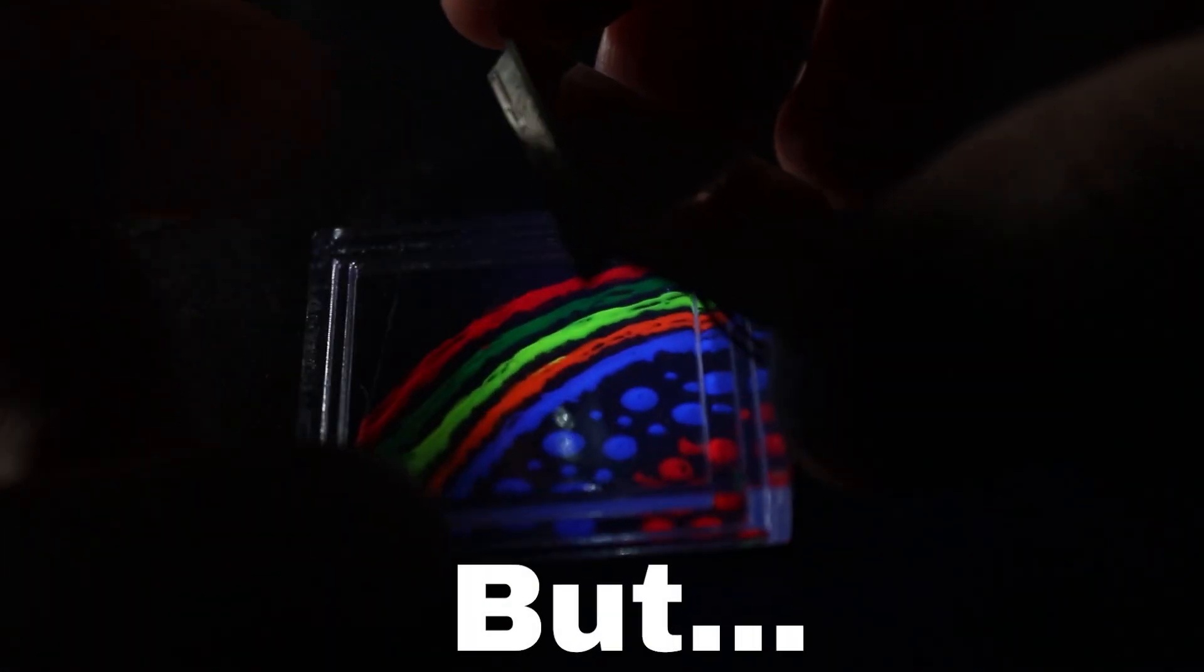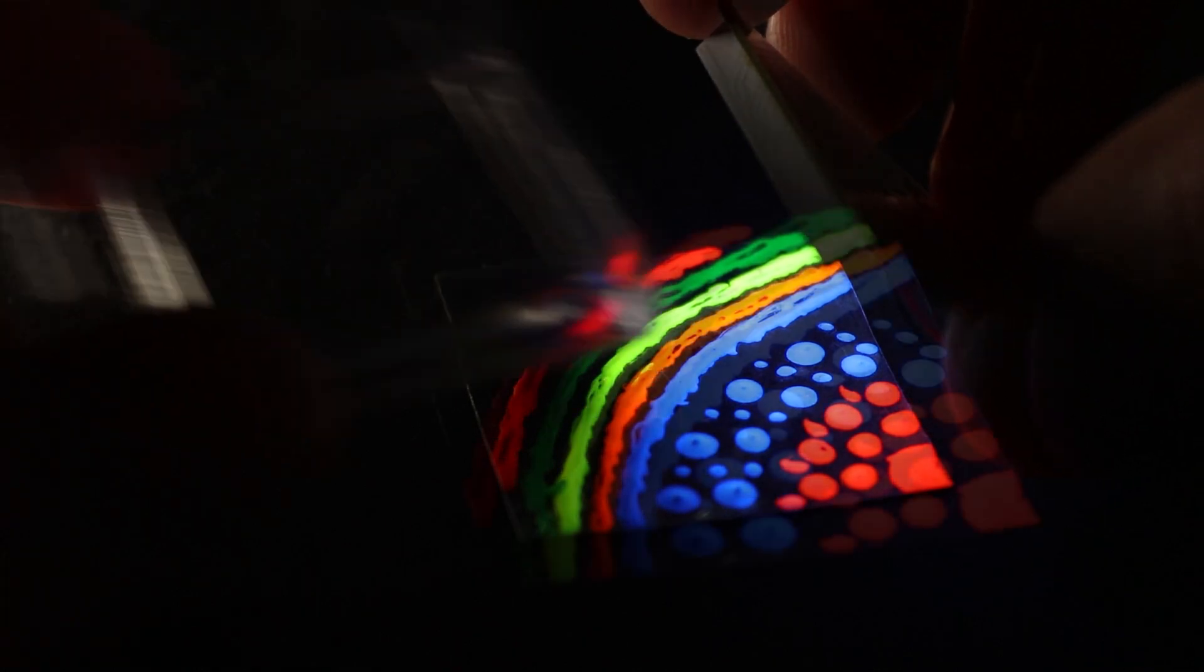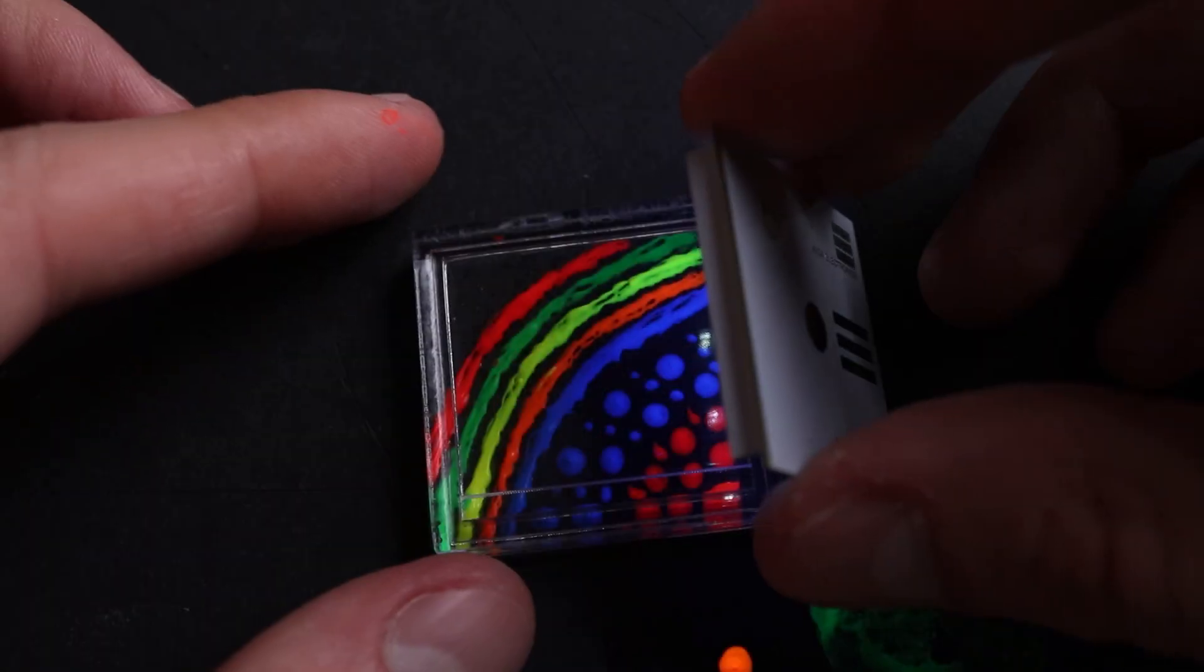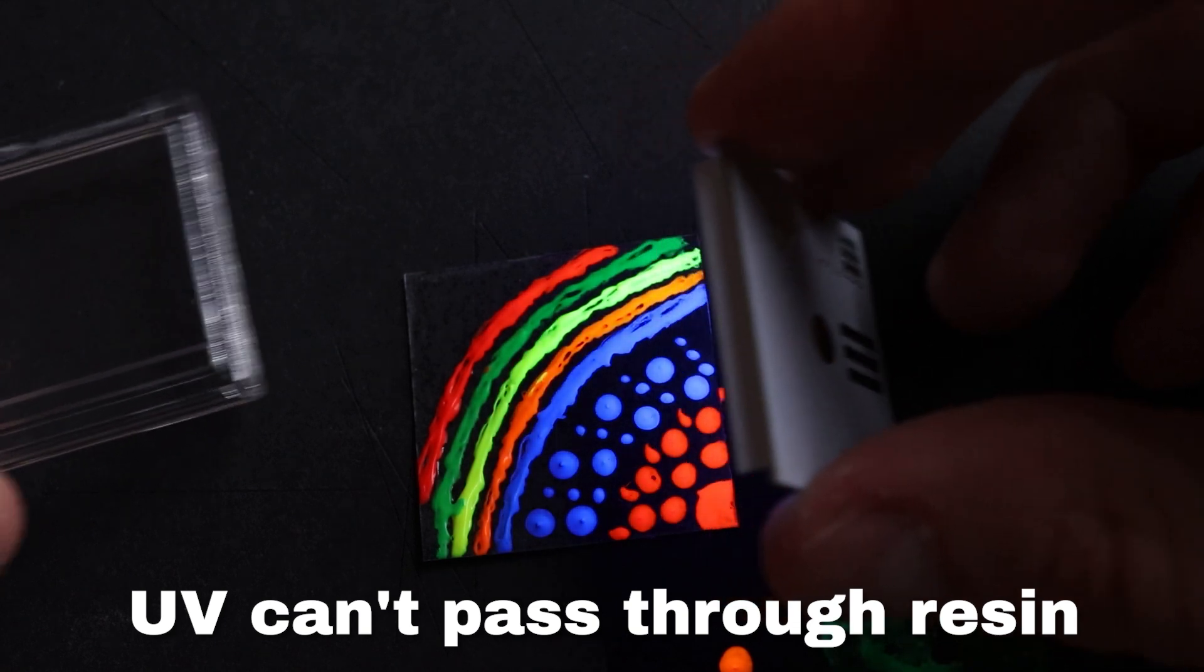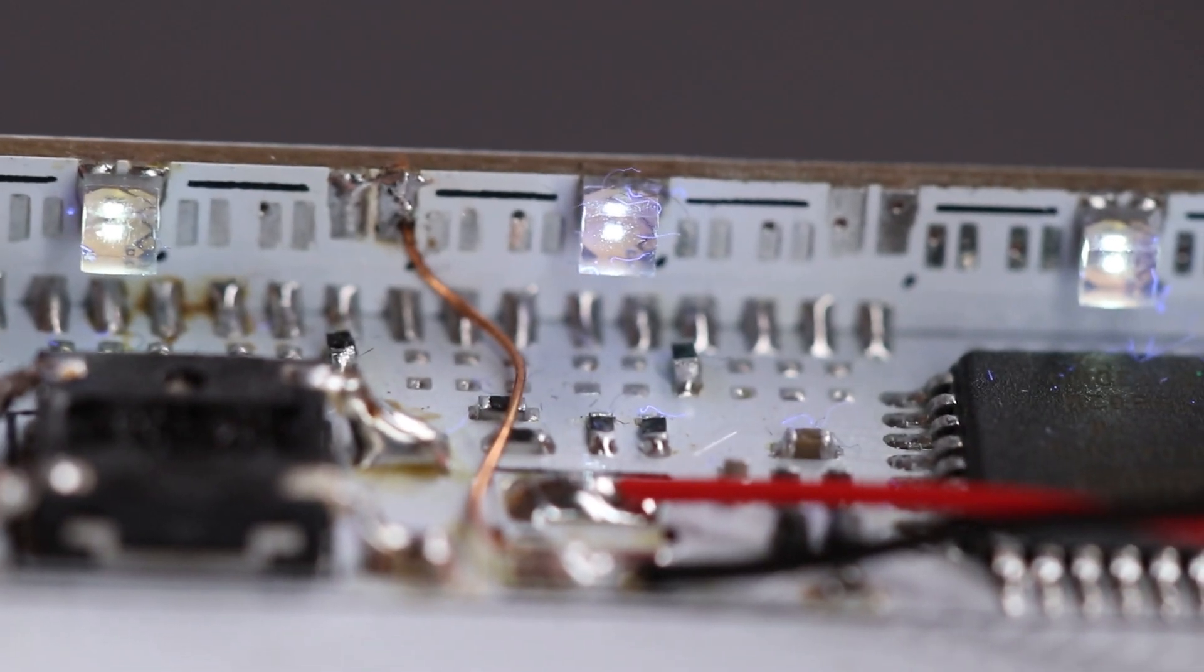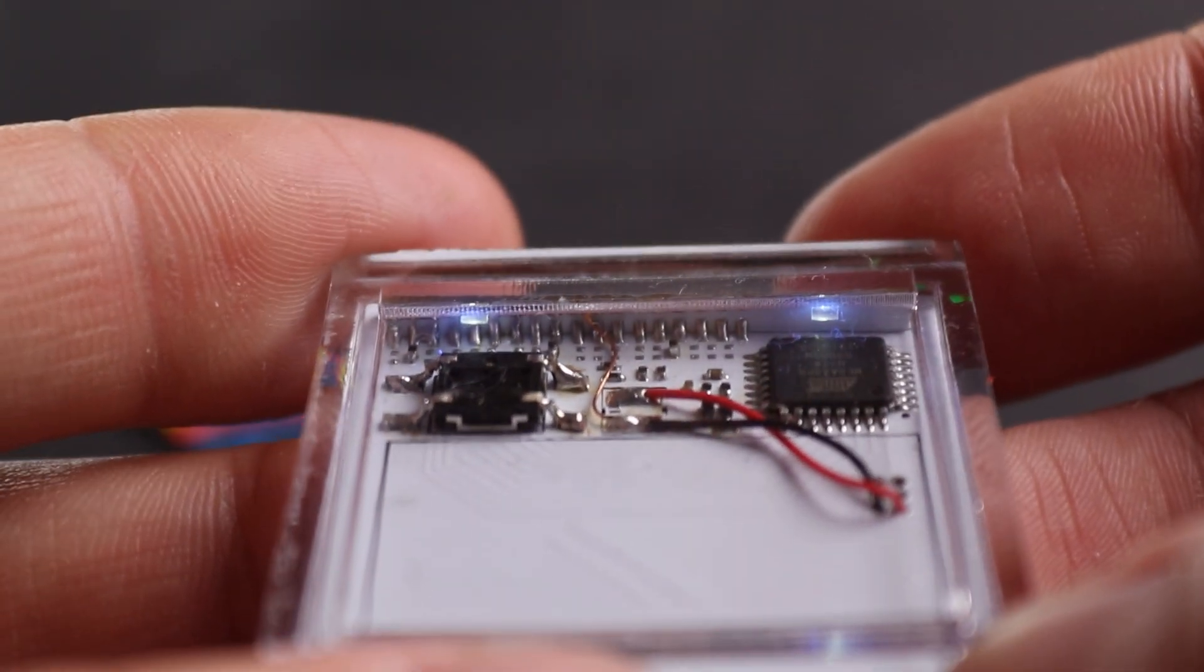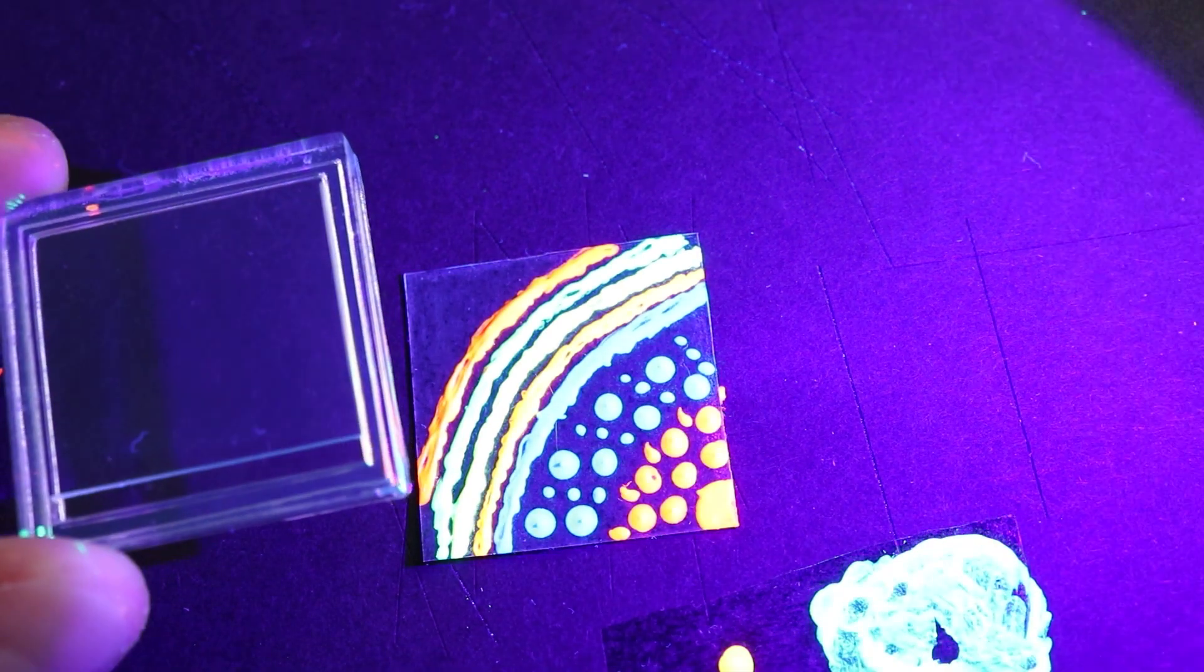However, something happened that I was kind of expecting, but was not 100% sure about. The UV light created by LEDs cannot fully pass through the printed resin case, resulting in the painting not being as bright as without a case. So from one side it's kind of a fail, but from another it's just a prototype, and we can learn from it. So the question now is why such a problem occurred, and how do we fix it?